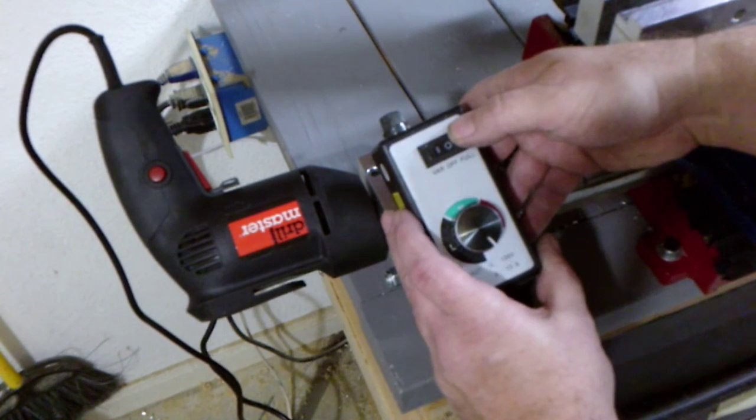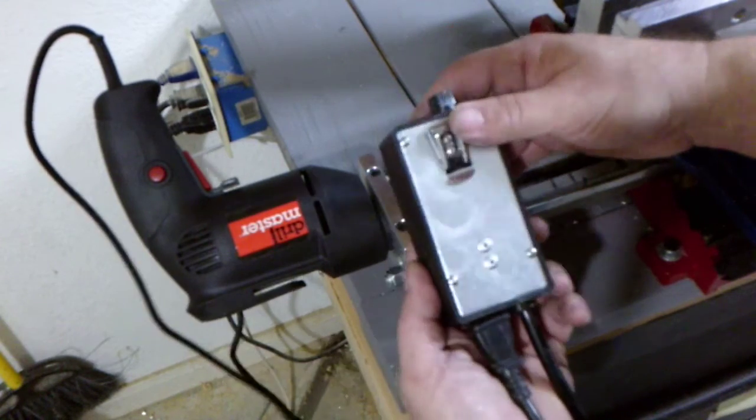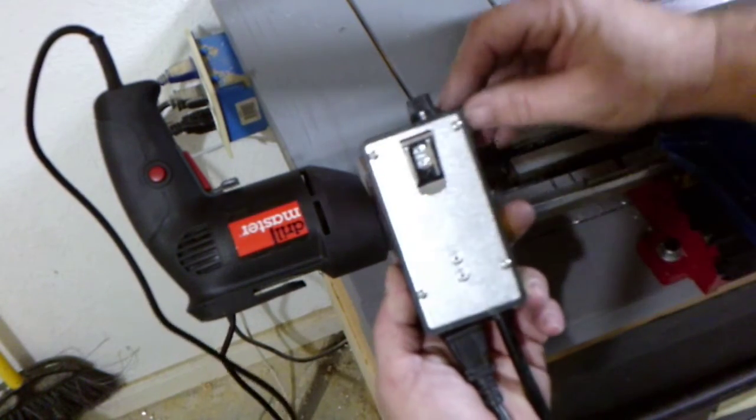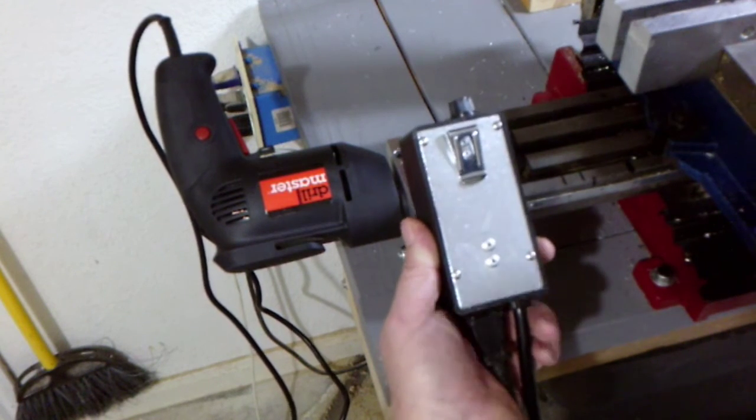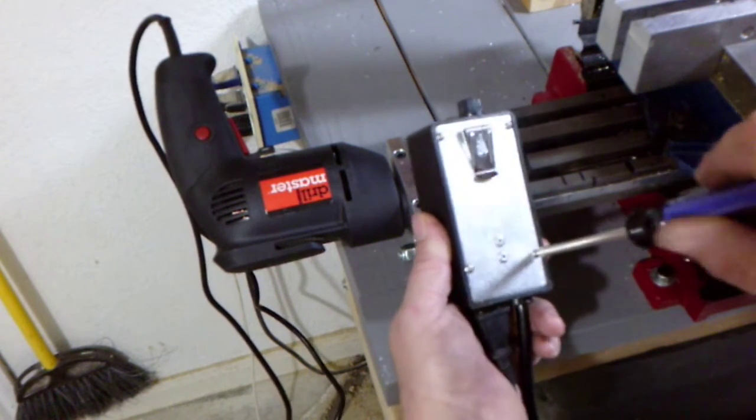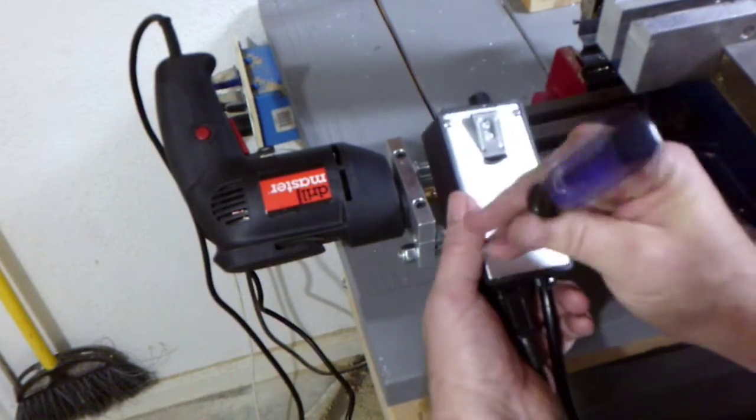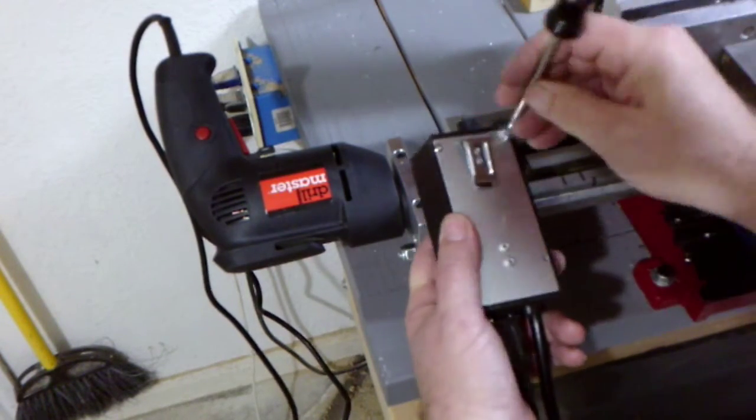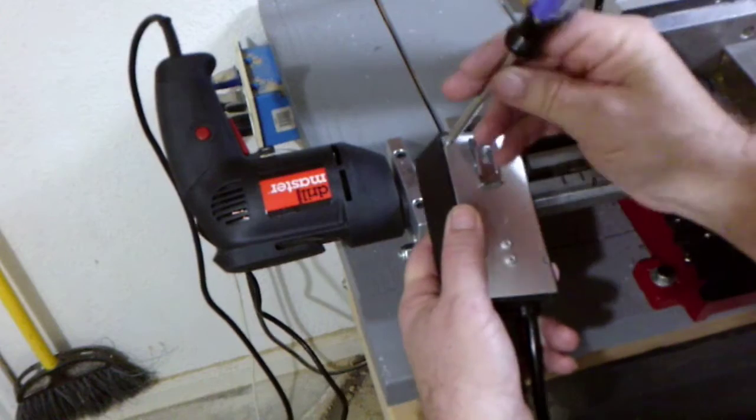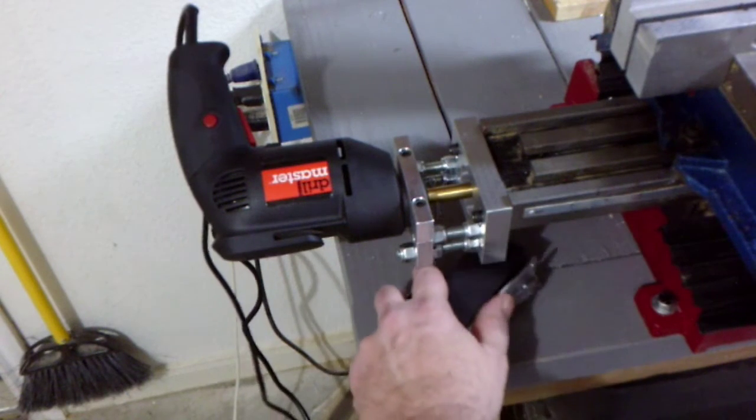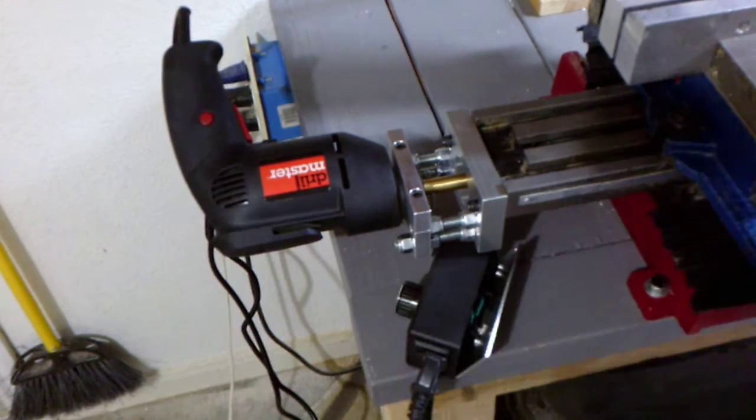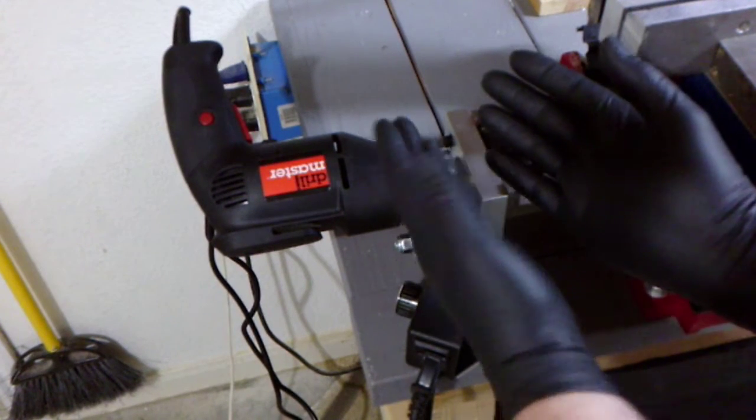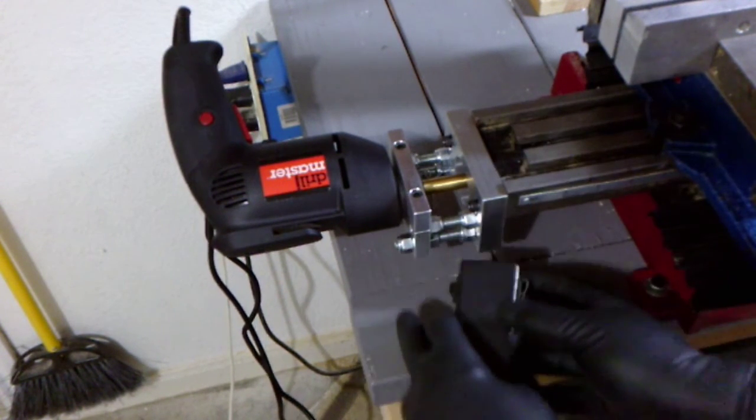On the back there are four screws for the cover plate. Inside there is a small potentiometer to adjust the gain. Since there is live voltage under the cover, you should use rubber gloves when making adjustments.